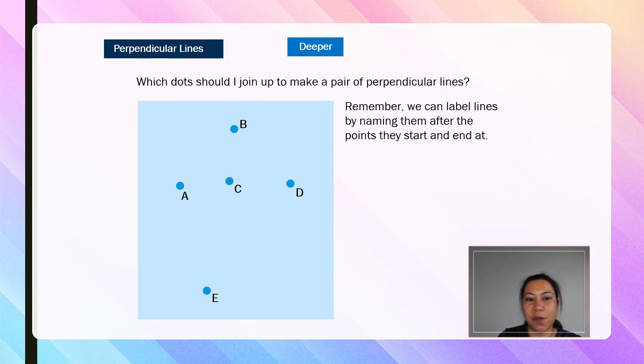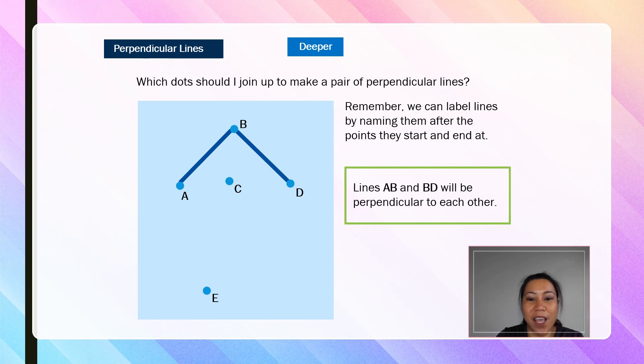I have a challenge for you. Which dots should I join up to make a pair of perpendicular lines? Remember, we can label lines by naming them after the points they start and end at. If you answer lines AB and line BD, you are correct. Lines AB and BD will be perpendicular to each other.